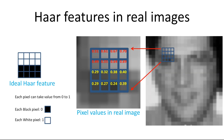Initially, the algorithm needs a lot of positive images — images of faces — and negative images — images without faces — to train the classifier. Then we need to extract features from it. For this, HAR features shown in the image are used.